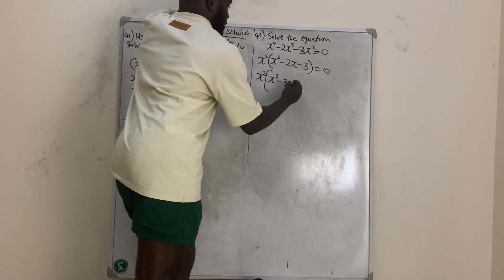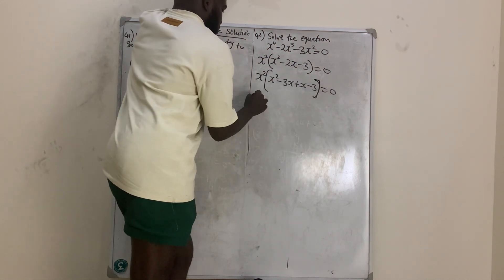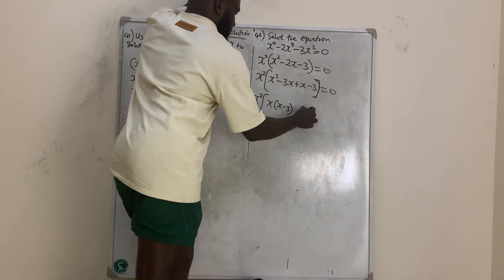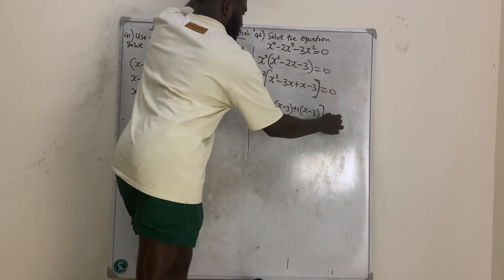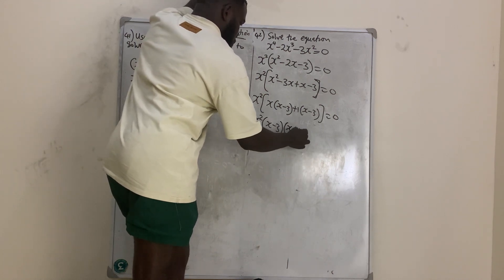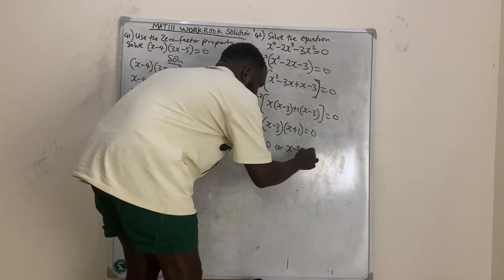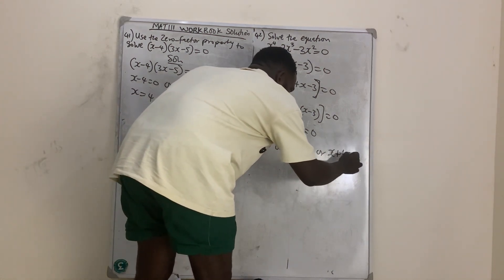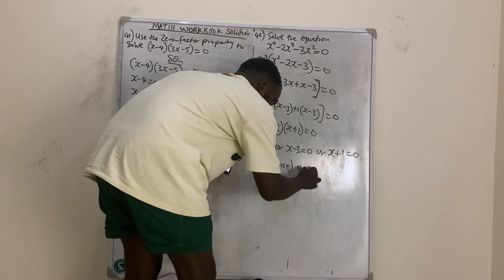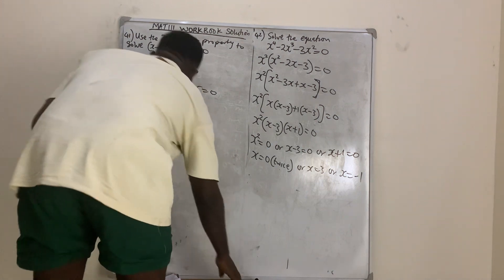So I have x squared times (x squared minus 3x plus x minus 3) equals zero. Factorizing: x squared times x(x minus 3) plus 1(x minus 3) equals zero, giving x squared times (x minus 3)(x plus 1) equals zero. Therefore x squared equals zero, so x equals 0 twice, or x equals 3, or x equals negative 1.